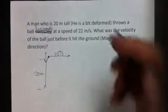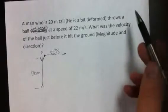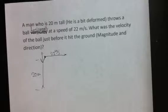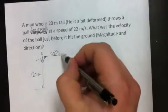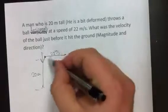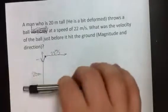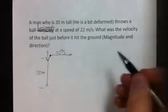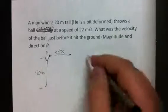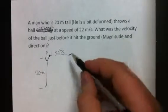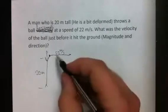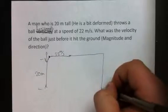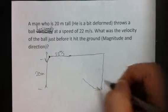He throws the ball horizontally at 22 meters per second. I want to know how fast the ball was traveling just before it hit the ground. We're going to neglect air resistance — in other words, the horizontal speed will not change; it's always going to be 22 meters per second. We need to find the vertical component. We'll take the horizontal and vertical components to find the resulting velocity.